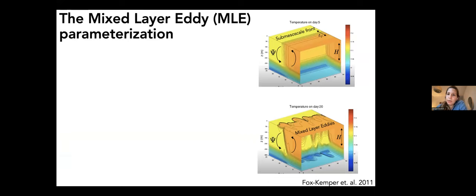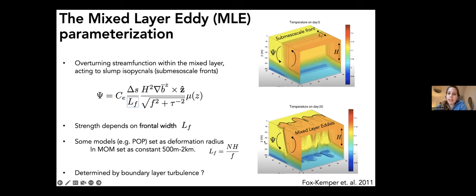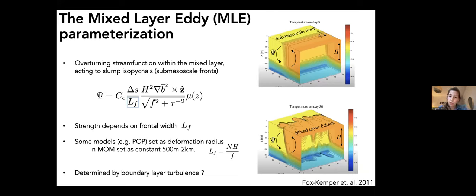The mixed layer eddy parameterization represents this re-stratification process — the positive buoyancy fluxes in climate models — and it was developed to represent the formation of mixed layer eddies, which are instabilities that form along fronts. The way it's represented in models is by an overturning stream function that strongly depends on how wide the front is — LF. How wide the front is can vary quite a lot in the ocean. However, in previous versions of the parameterization, this was set to either be a constant or dependent on the deformation radius, which has been found to be unreliable because the fronts interact heavily with boundary layer turbulence.